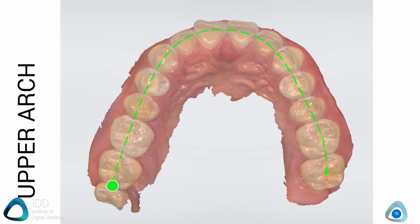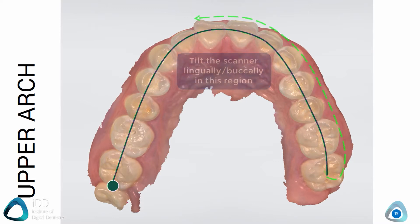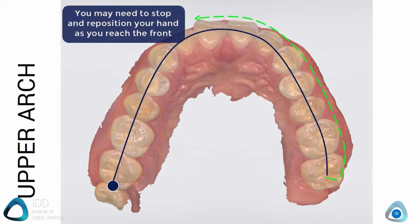From the last molar, move to the occlusal aspect of the molar on the other side of the arch in a smooth and steady motion. When you get to the anterior aspect, it's common to have to tilt the scanner slightly lingually or buccally so that you don't lose alignment. Once you're at the other side, tilt lingually or buccally and move towards the anterior aspect, also capturing the buccal gingiva. You can reposition, then place the scanner in an area already scanned and it will recognize this and pick up the scan as normal.